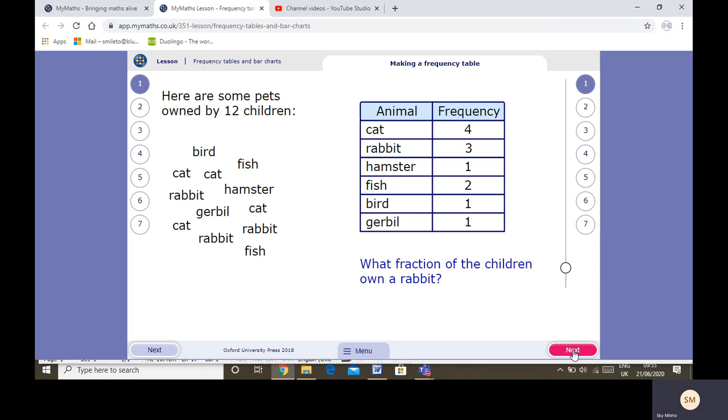What fraction of the children owned a rabbit? That's quite tricky. 3 out of 12. If you can get this as a fraction that's super good. It is 3 over 12 which is the same as 1 quarter. If you knew that, that's awesome work.